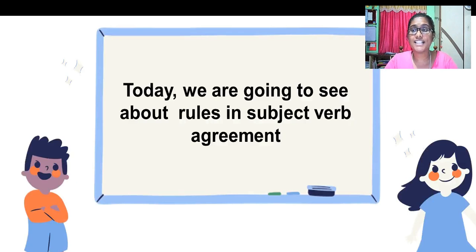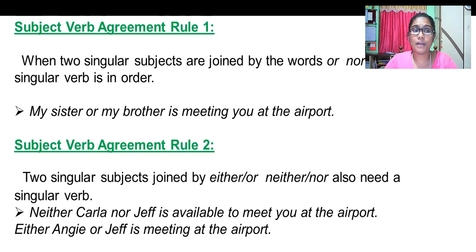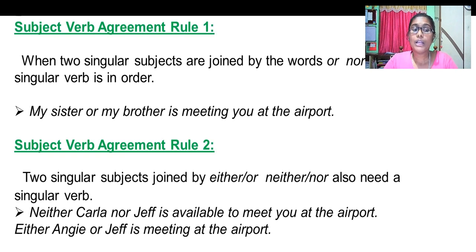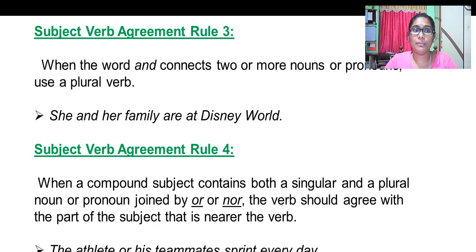Now let us learn the rules of subject-verb agreement. Rule number one: when two singular subjects are joined by 'and', a singular verb is in order. Rule number two: when two singular subjects are joined by 'either/or' or 'neither/nor', they also need a singular verb.